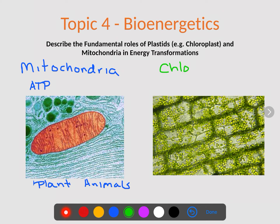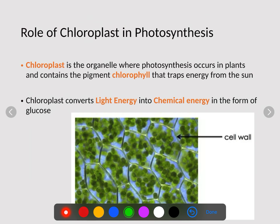The other organelle we're going to talk about is chloroplasts. The chloroplast is only found in plant cells, and notice that chloroplast is green. Chloroplast actually has a pigment within it called chlorophyll, and chlorophyll is what absorbs the light. When we're talking about absorbing light, it actually absorbs everything except for green — green is actually bounced back into your eye.